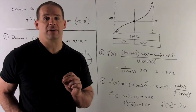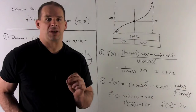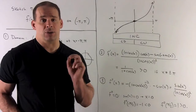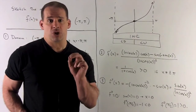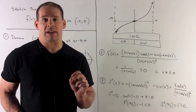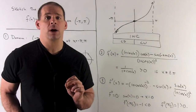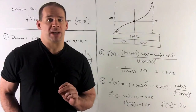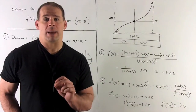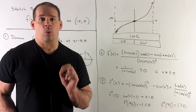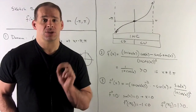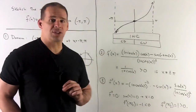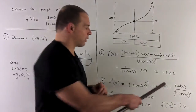Moving to the second derivative, we look for inflection points and regions of concavity. Writing f'(x) = (1 + cos(x))^(-1) and applying the chain rule: bring down minus one, exponent becomes minus two, leave the inside alone, and multiply by the derivative of 1 + cos(x), which is minus sin(x). The second derivative simplifies to sin(x) / (1 + cos(x))².